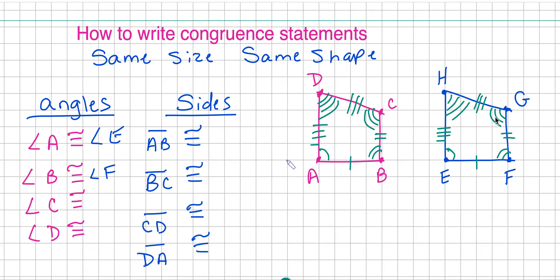Angle C has three arcs drawn, so I'm going to come over to this figure and find the angle that has three arcs drawn, and that's going to be angle G. Angle D has four arcs drawn, so I'm going to come over to this figure and find the four arcs drawn, and that's going to be angle H. Now I'm going to look for congruent sides.